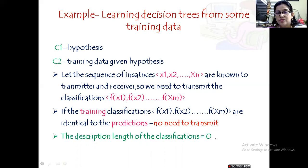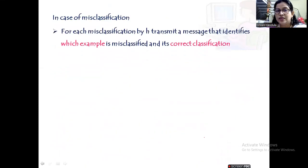Suppose if there is a misclassification, in case of the misclassification we will be sending only which example is misclassified and what is its correct classification. We are not sending the entire result of which example is correctly classified; we are sending only which is misclassified and what is its correct classification. Thereby minimizing the number of bits to transmit or the input length of the information that has to be transmitted.